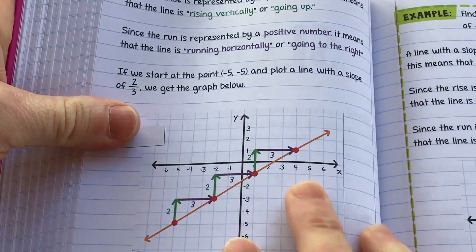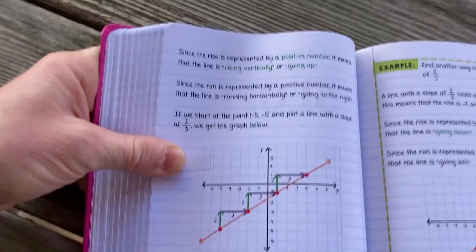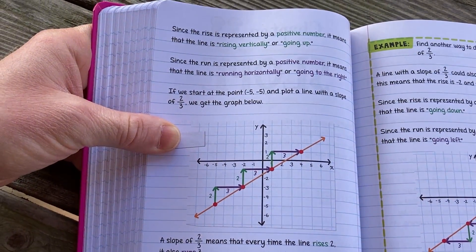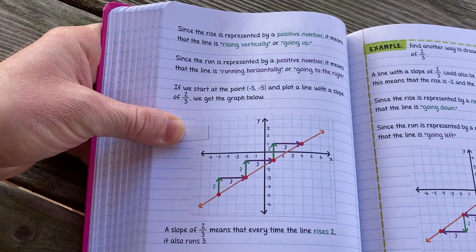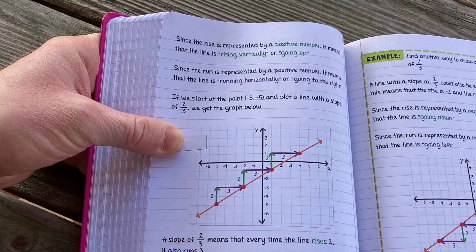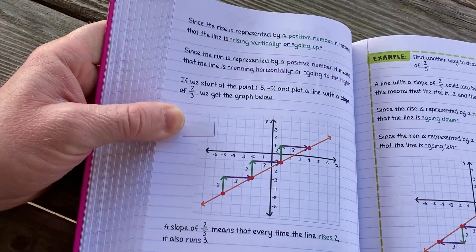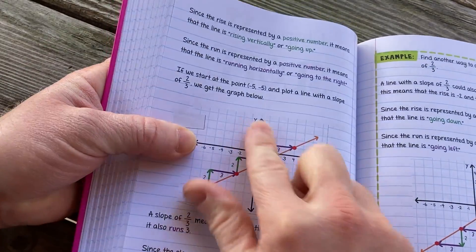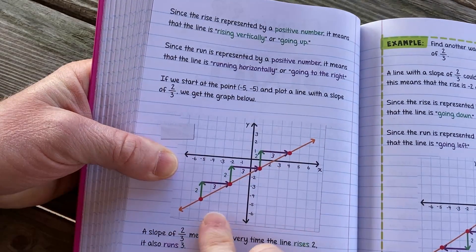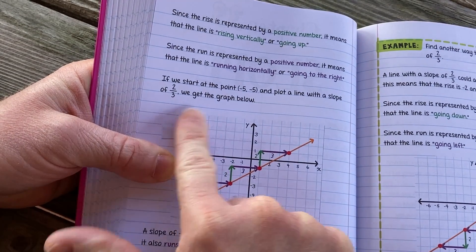For example, a line has a slope of two-thirds. Since the formula for slope is rise over run, this means that the rise is two and the run is three. And here it says since the rise, let me zoom out a little bit here, is represented by a positive number, it means that the line is rising vertically or going up. Since the run is represented by a positive number, it means that the line is running horizontally or going to the right.